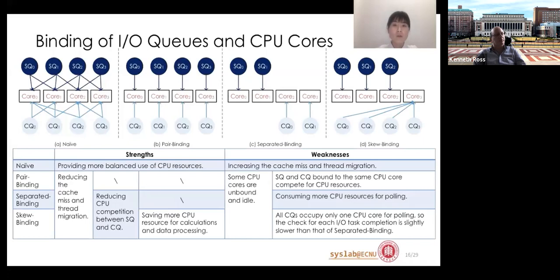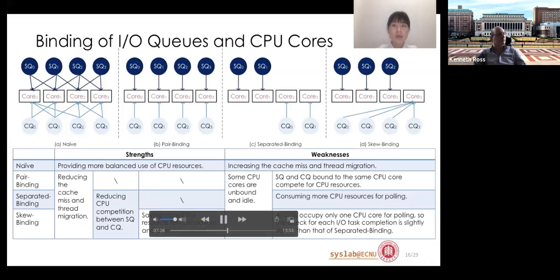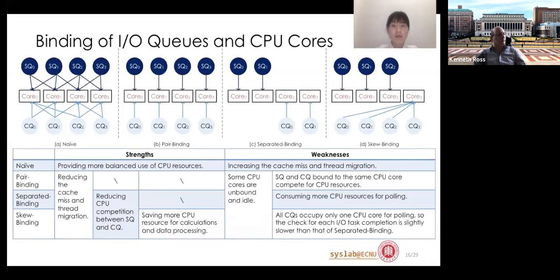The naive mode increases cache misses and thread migration. The Pion binding mode mitigates this by setting CPU affinity for queue pairs, but the SQ and CQ bound on the same CPU core compete for resources. The separated binding mode reduces CPU contention between SQ and CQ but leaves half of CPU cores idle. Secure binding mode binds all CQs to one CPU core, allowing more CPU resources for data calculation.